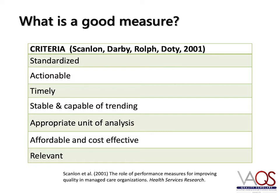Try to pick measures that are already available or have good operational definitions from other reliable sources or experts. Some examples of where to find these measures include the CMS Measures Inventory, the Agency for Healthcare Research and Quality, and the National Quality Forum. Your organization may also have specific measures developed locally. It is most important to have measures that are most directly relevant and actionable for your project.